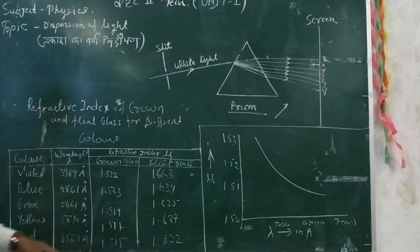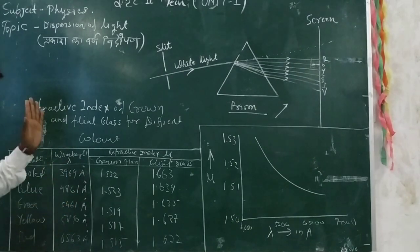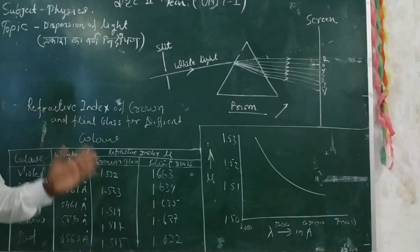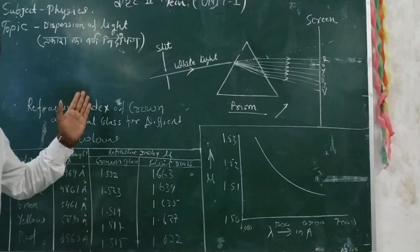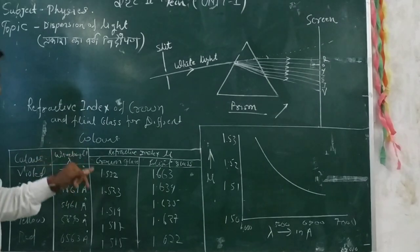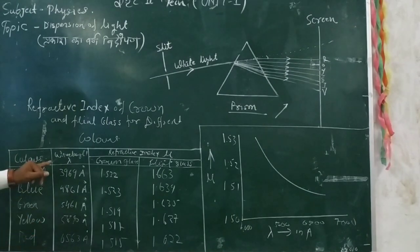To understand different colors, this table is made. You can see that we have some colors like violet, blue, green, yellow, red, and the respective wavelengths we have used in this table. And with crown glass and flint glass, the refractive indices are shown in this table.